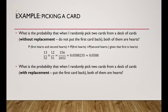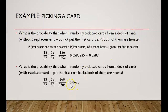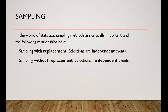Now, what is the probability of picking two hearts with replacement — putting the first card back? P(first hearts and second hearts) = 13/52 × 13/52 = 0.0625. In statistics, when sampling with replacement, selections are independent events. When sampling without replacement, selections are dependent events.